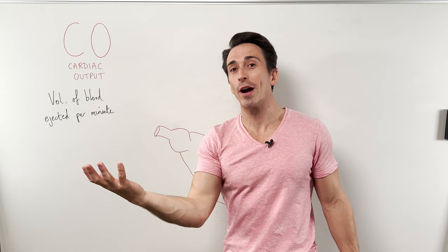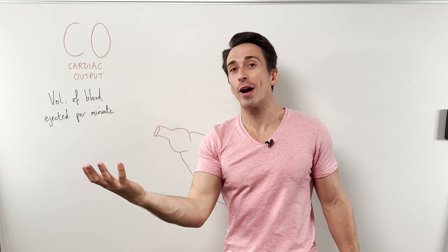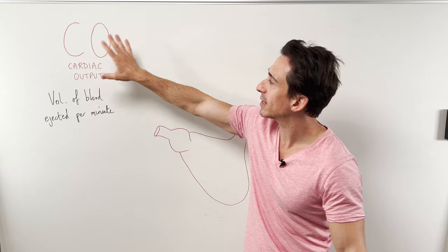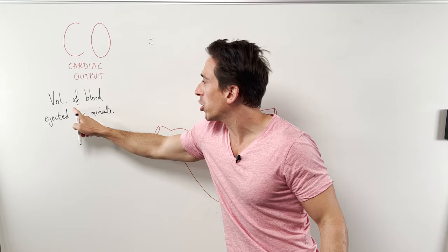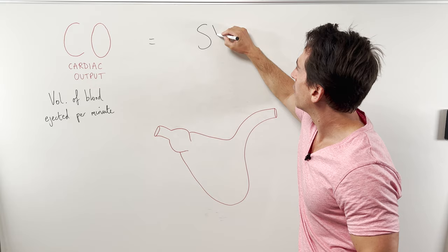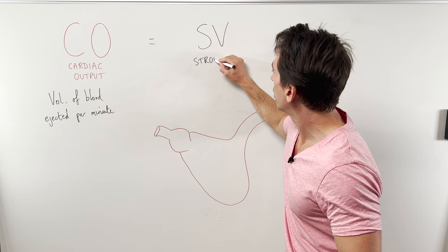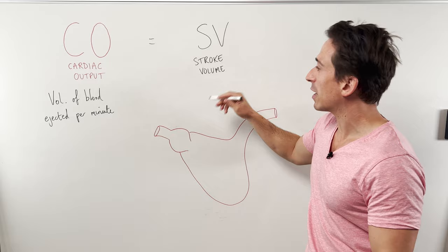The volume of blood ejected in a single contraction and how many contractions we have every minute. This means cardiac output is a very simple equation: cardiac output equals the volume of blood ejected every contraction, which we actually call the stroke volume — the amount of blood ejected every time the heart contracts.